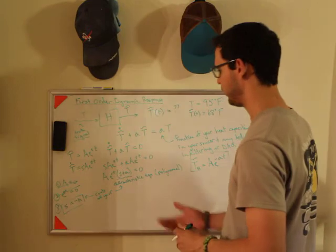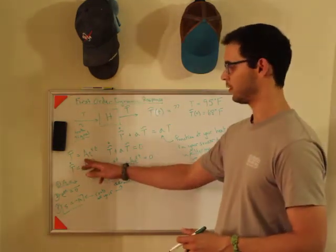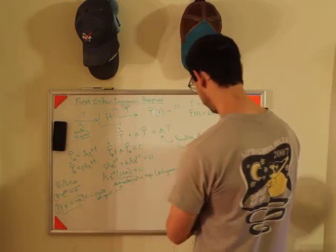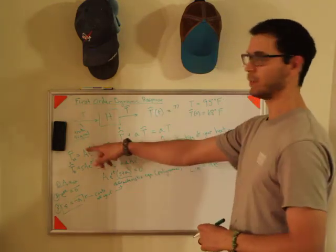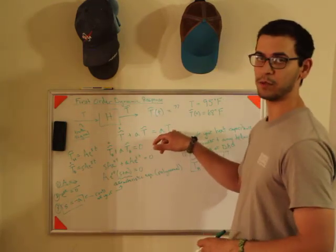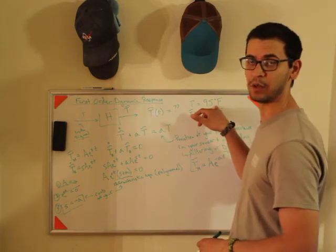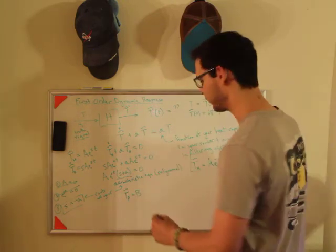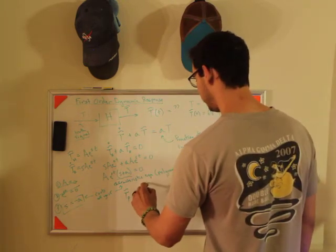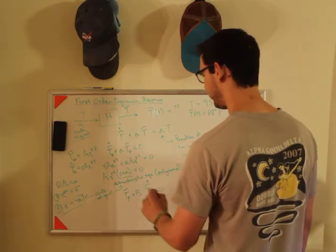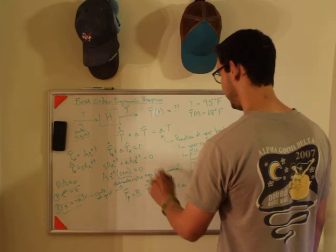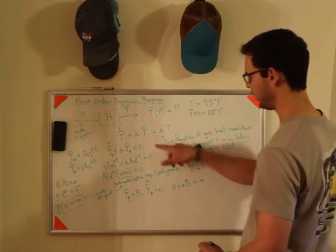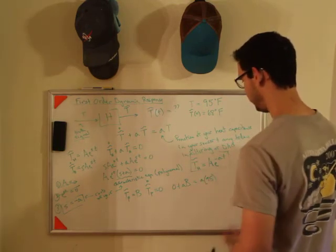So now what we need to do is find the particular solution. You do the same thing that you did with the homogeneous. You assume a solution, but what you want it to do is you want it to be equal to the right-hand side. So the right-hand side is just equal to a constant. So I'm just going to make t tilde particular equal to B, just a constant. So t particular dot is zero. And so if I plug this in, I'm going to get zero plus AB equals A. And remember, t is 95.